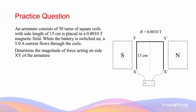An armature consists of 50 turns of square coils with side length of 15 centimetres, placed inside a 0.0010 Tesla magnetic field. When the battery is turned on, a 5 A current flows through the coils. Determine the magnitude of force acting on side XY of the armature.